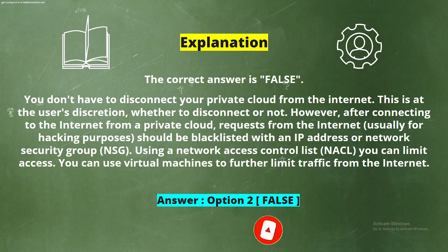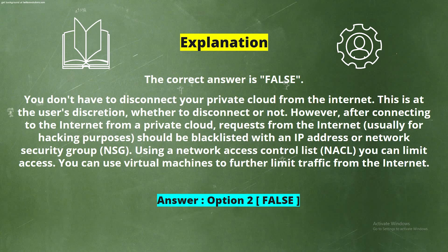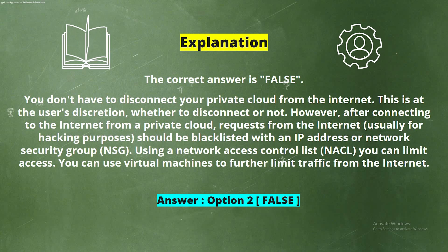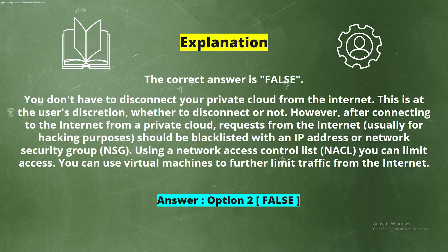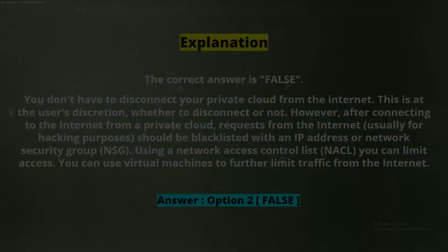However, after connecting to the internet from a private cloud, requests from the internet should be blocklisted with an IP address or network security group. Using a network access control list, you can limit access. You can also use virtual machines to further limit traffic from the internet.